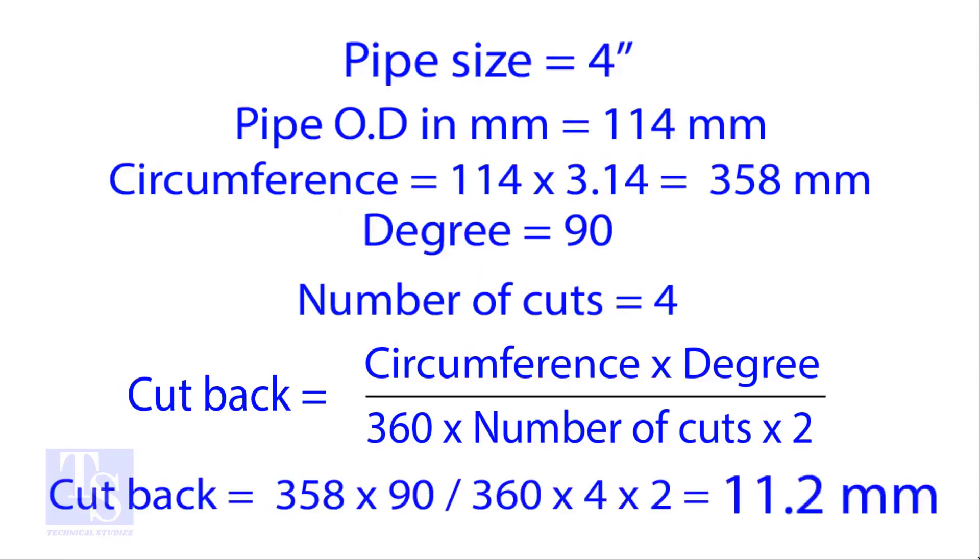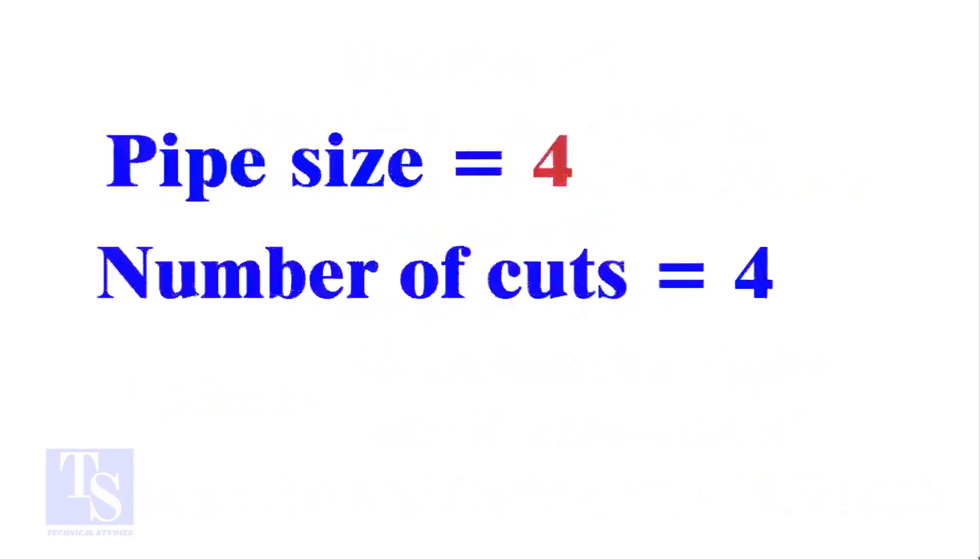Let us try the quick method. See the fast calculation method now. Let the pipe size be 4 inch, and the number of cuts also be 4. Remember, you can use any number of cuts up to 9.